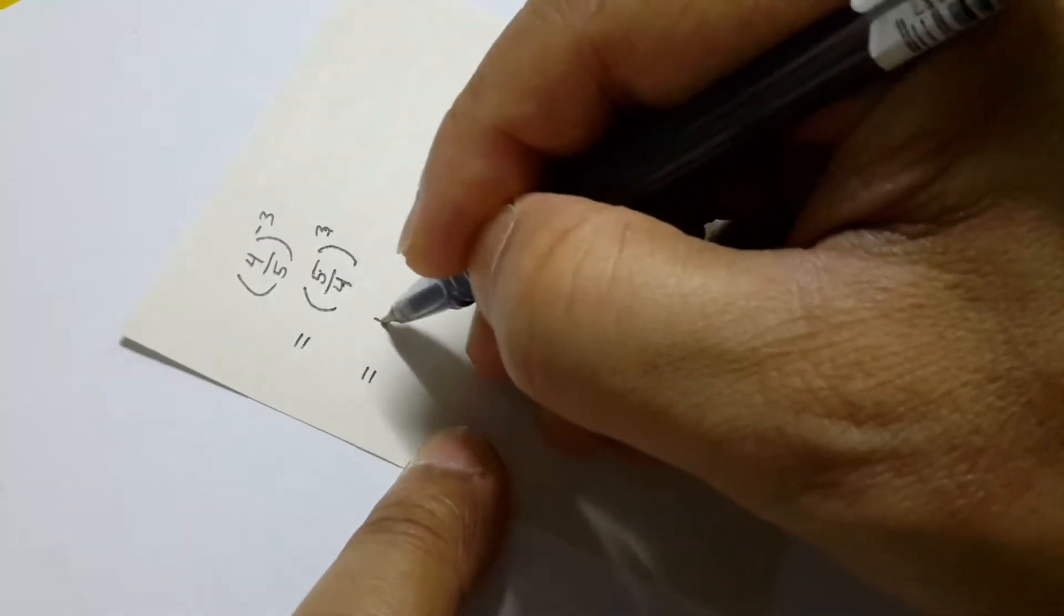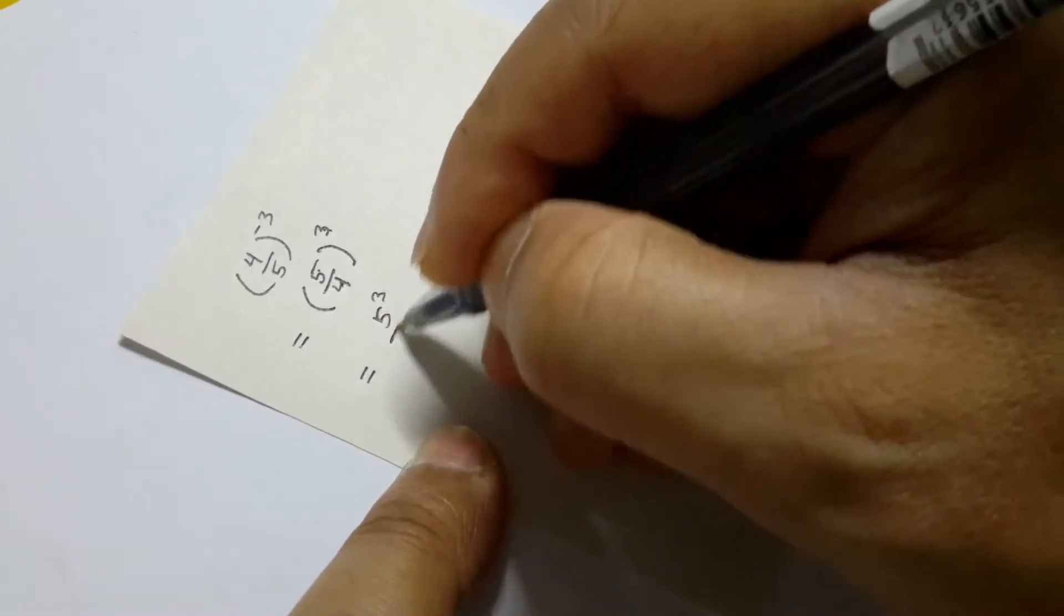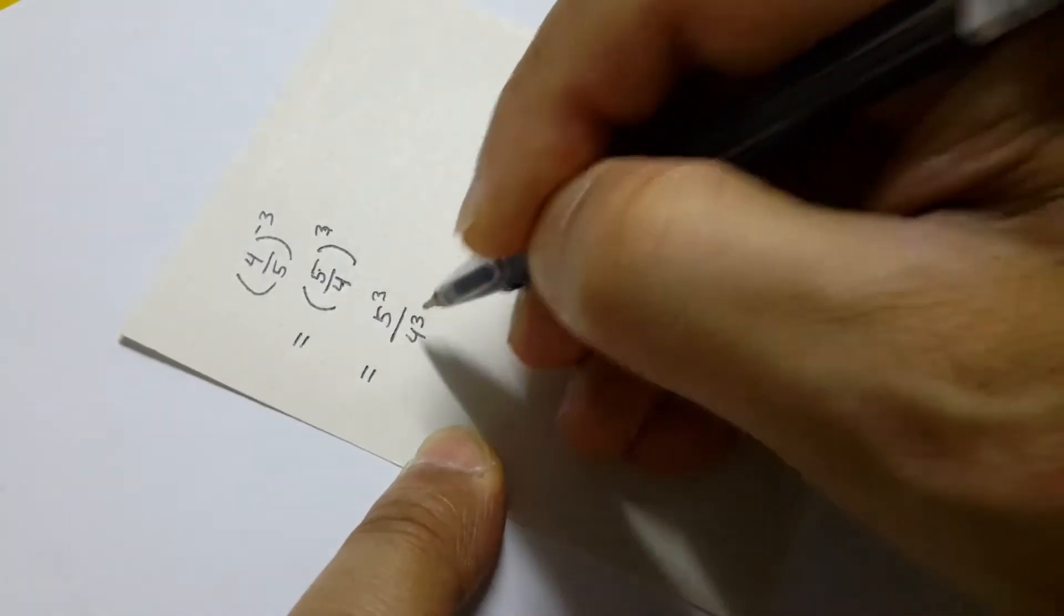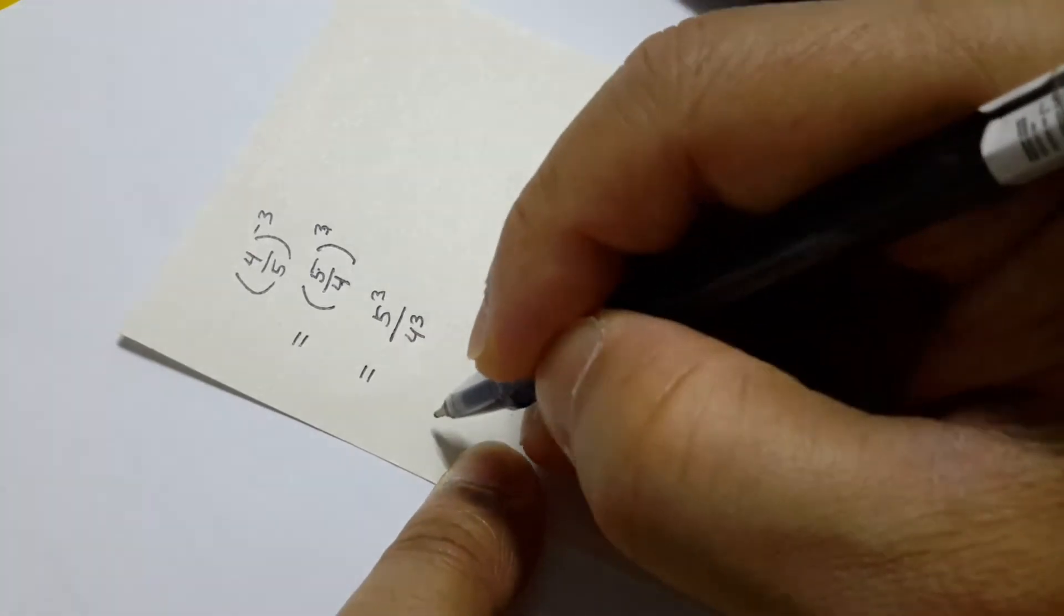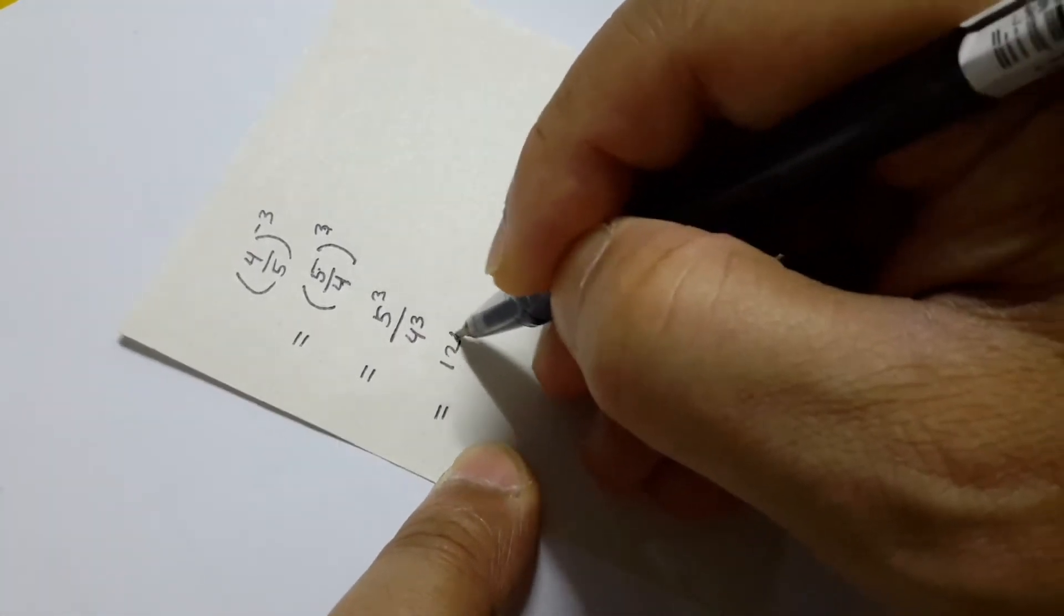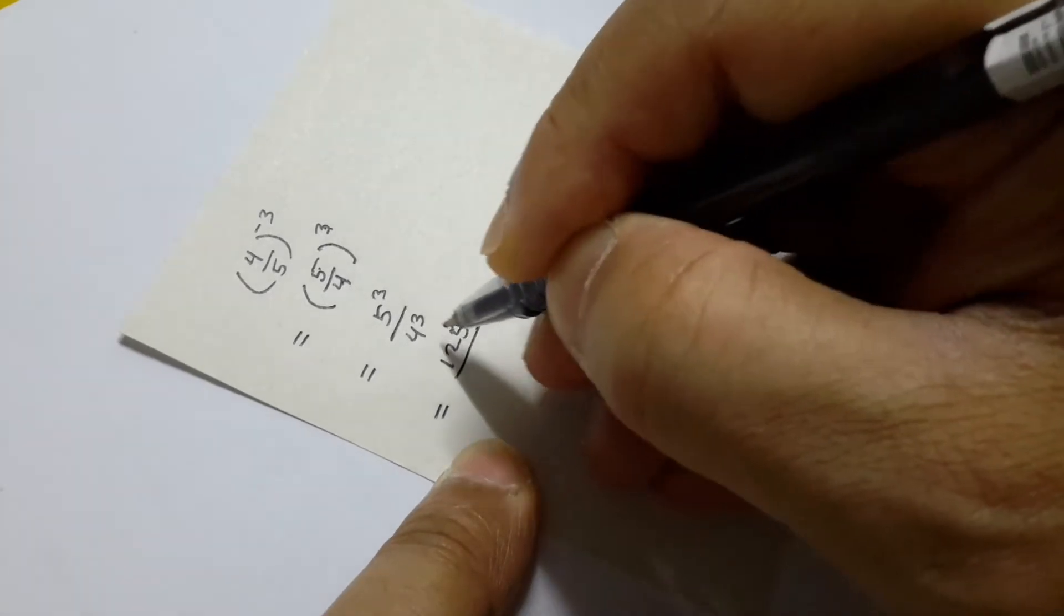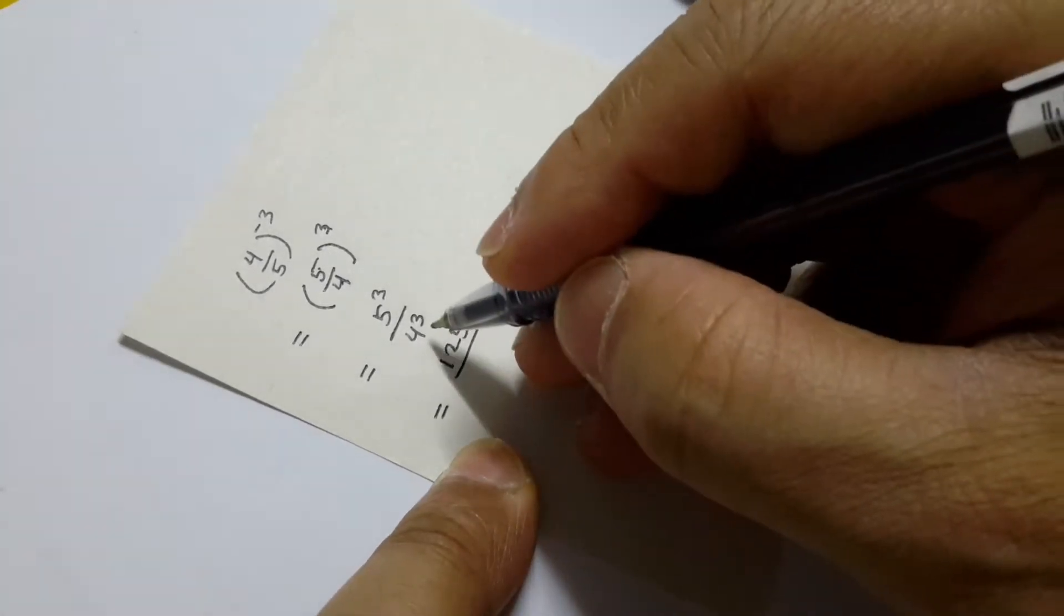Okay, what is 5 power 3? 5 squared is 25, 25 times 5 is 125. 4 times 4, or 4 squared, is 16, and 16 times 4 is 64.